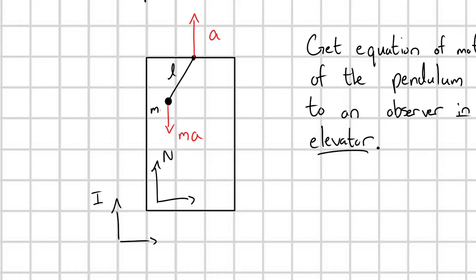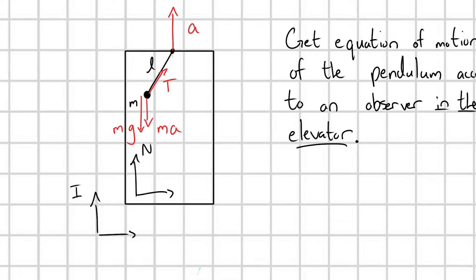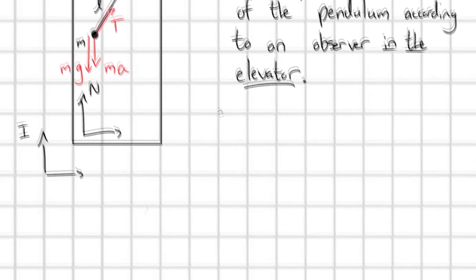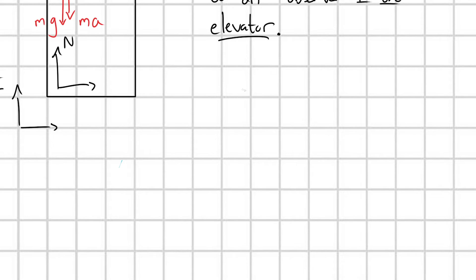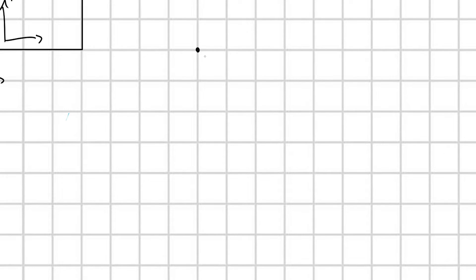So what other forces would I have on this pendulum? Well, I'm going to have the force of gravity. So we have M G, and I'm going to have some tension force pulling up on this bob. I'm going to call this T. So now what I'm going to do is I'm going to redraw this pendulum to make our life a lot easier here going forward. So here we go. I'm going to redraw our pendulum. Notice how I'm switching the orientation of the pendulum. I'm doing this for a very specific reason.